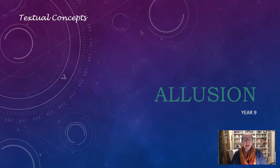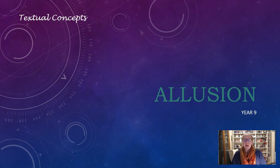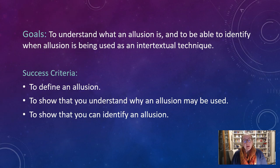Hey everyone, so today we're going to have a look at allusion — that's allusion with an A — and how it's important in Ten Things I Hate About You and The Taming of the Shrew. Your goal for today is to understand what an allusion is and to be able to identify when allusion is being used as an intertextual technique.